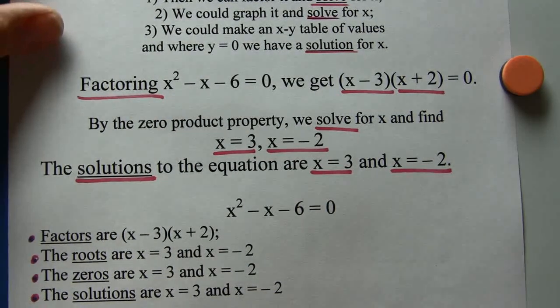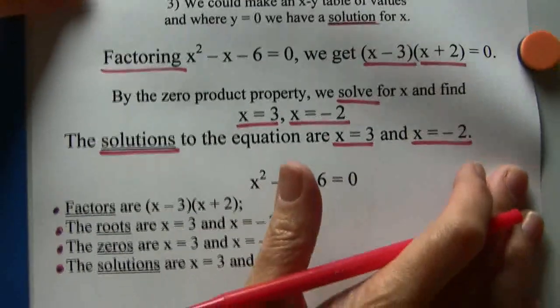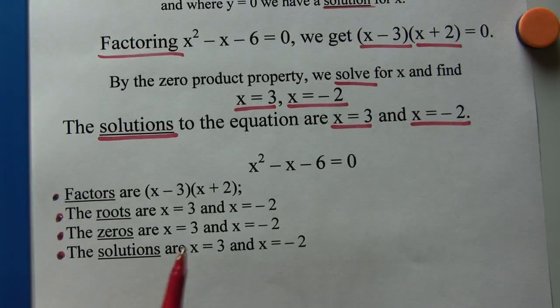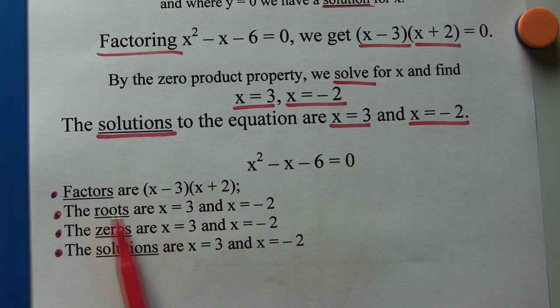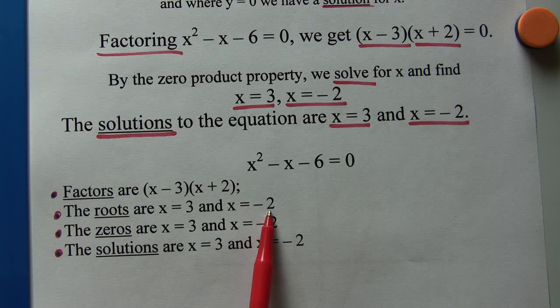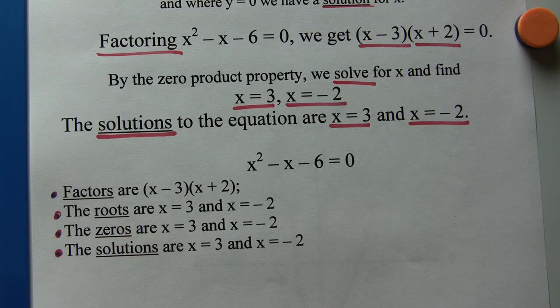So we can say so far that the factors are the quantity x minus 3 and x plus 2. The roots are x equals 3 and x equals negative 2. The zeros are the same and the solutions are the same.